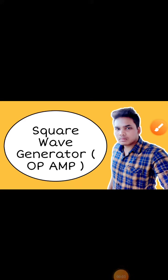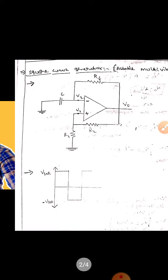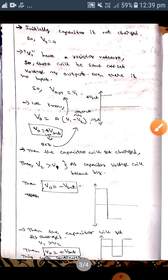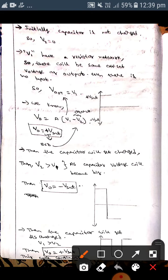Hey guys, I hope you are all fine. Today we are going to discuss the square wave generator in op-amp. Let's get into the topic. Here is the diagram of a square wave generator. It is also known as an astable multivibrator. The waveform will be produced here. Initially, the capacitor is not charged.